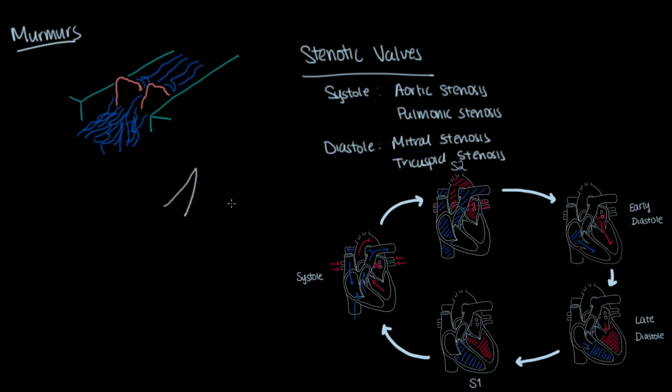When blood flows through this essentially narrowed valve because it does not open all the way, it causes turbulent flow and a characteristic crescendo-decrescendo murmur.